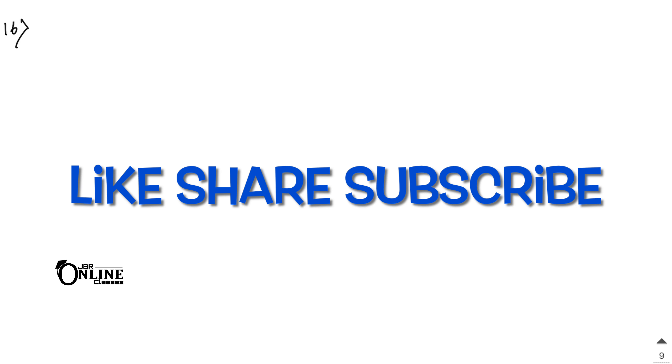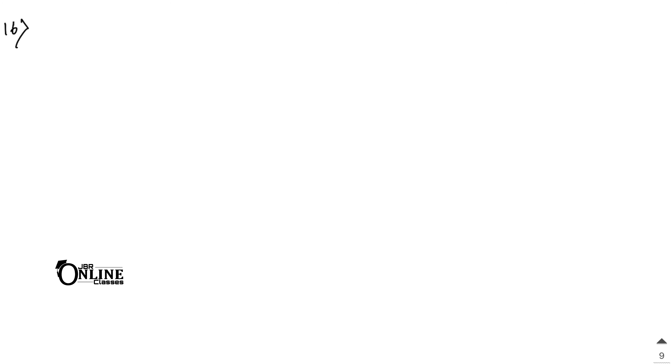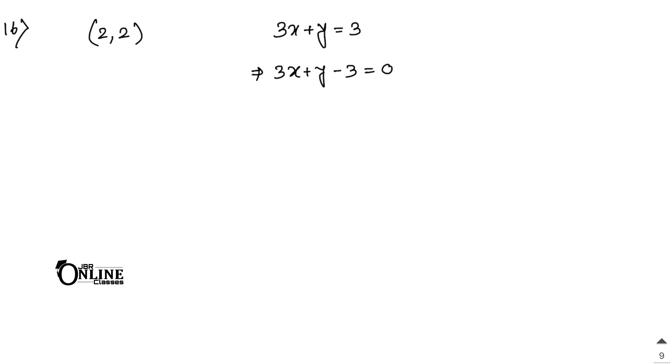This is the last sum for this video. Please like, share, and subscribe to the channel. Sum 16: a line passes through point (2, 2) and is perpendicular to 3x plus y equal to 3. Find the y-intercept. Rewriting: 3x plus y minus 3 equal to 0, so m1 equals minus 3.